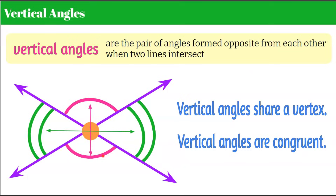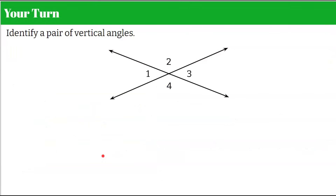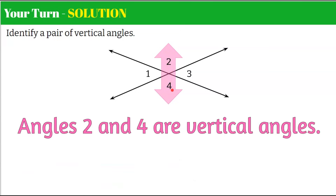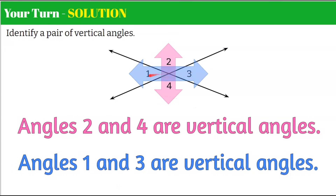Before we use vertical angles to find missing values, I'd like you to identify a pair of vertical angles in the diagram. Pause the video and identify which angles are vertical angles, then come back to check your work. Angles 2 and 4 are opposite each other and share the vertex from the intersecting lines, so they are vertical angles and congruent. Another correct answer is angles 1 and 3, which are also opposite each other and vertical angles.